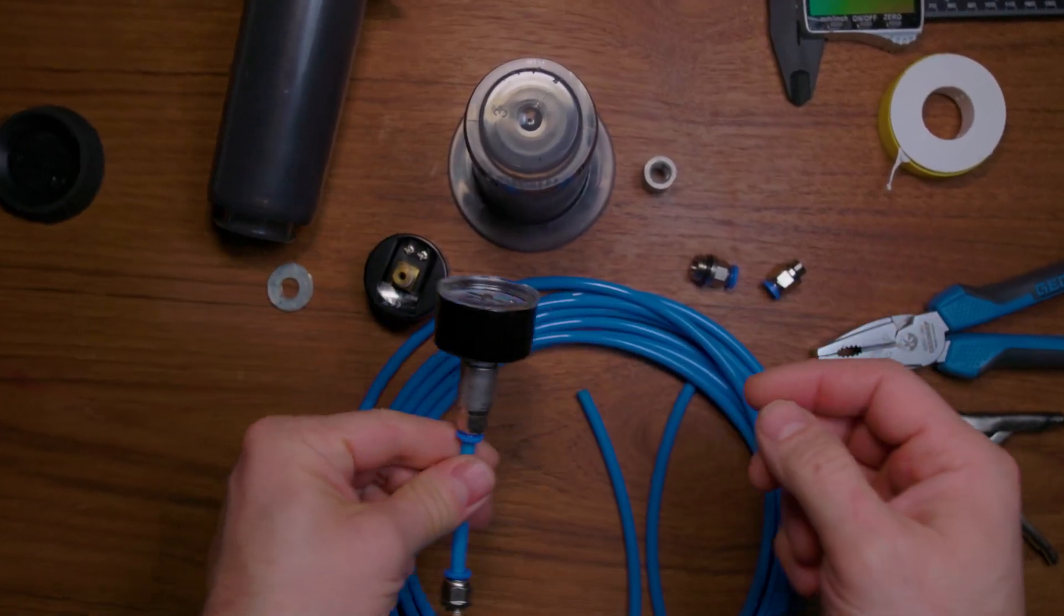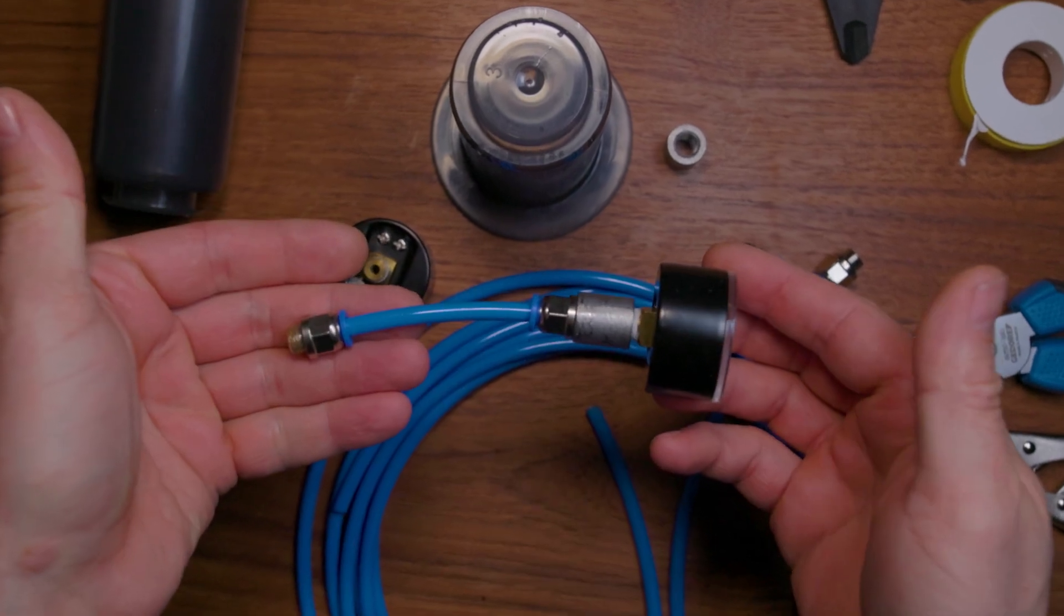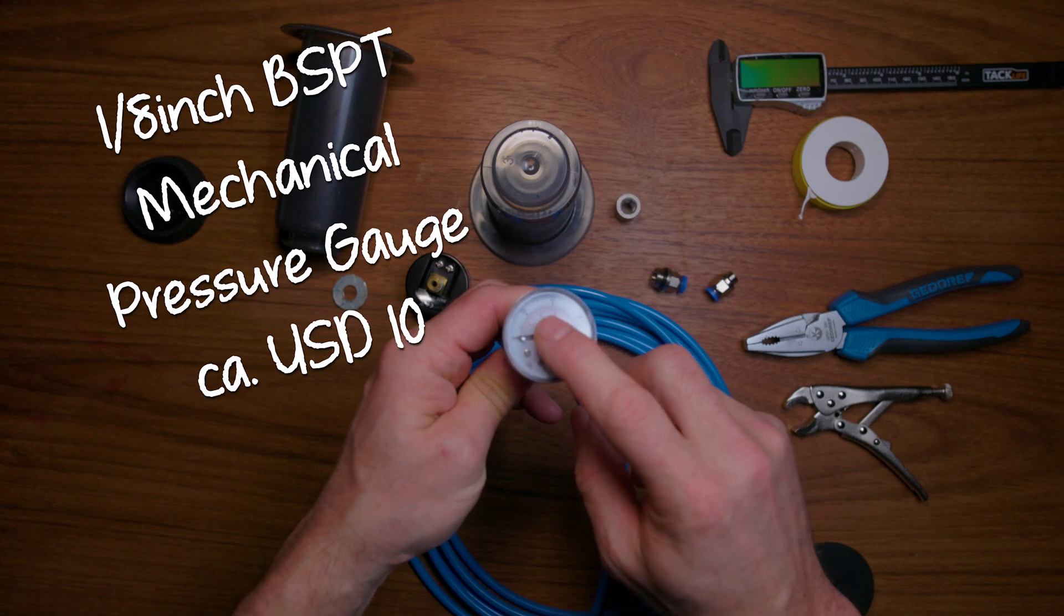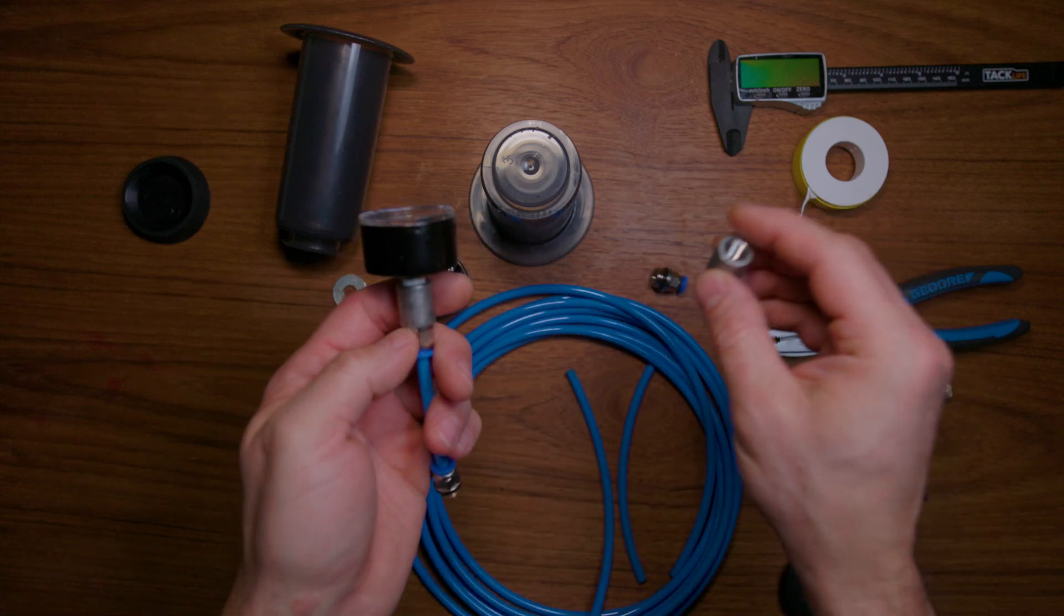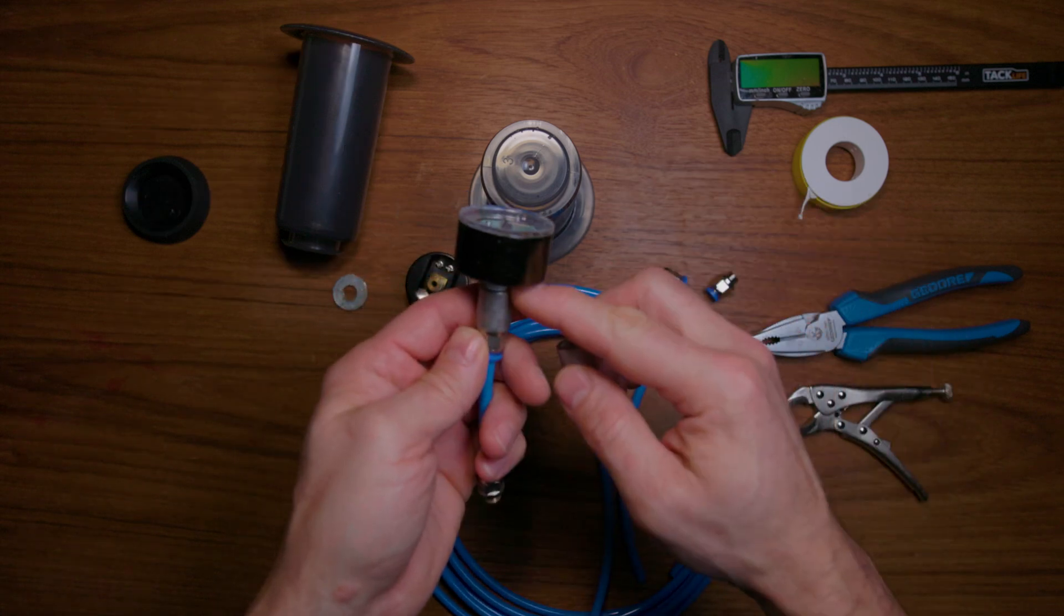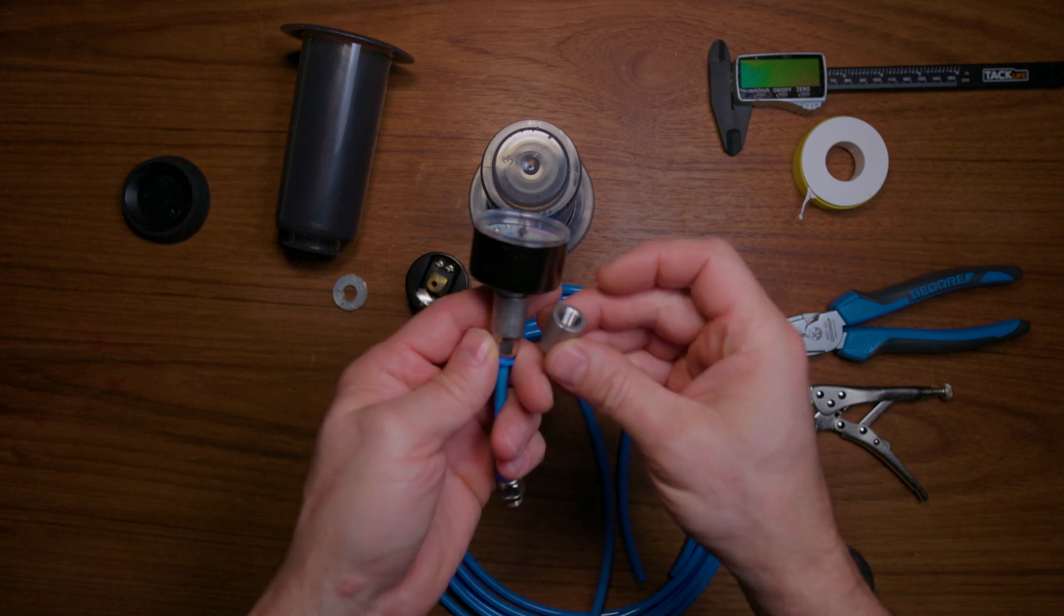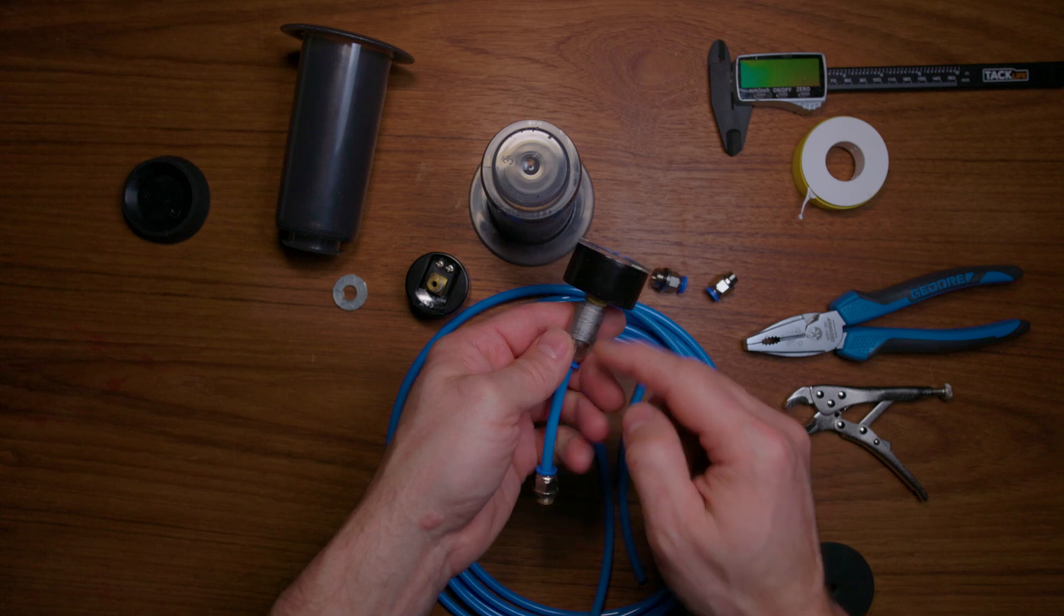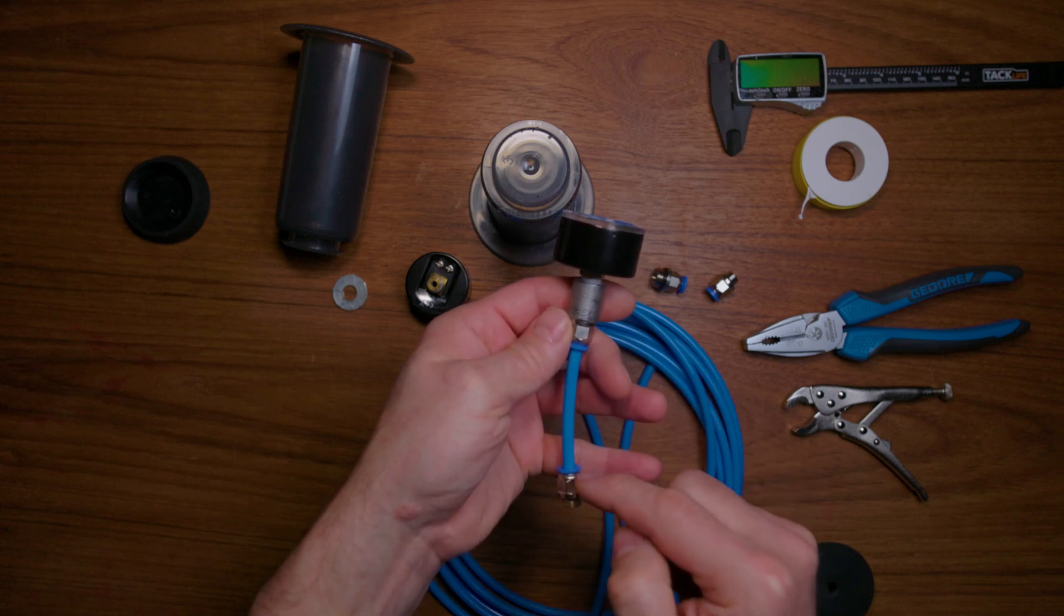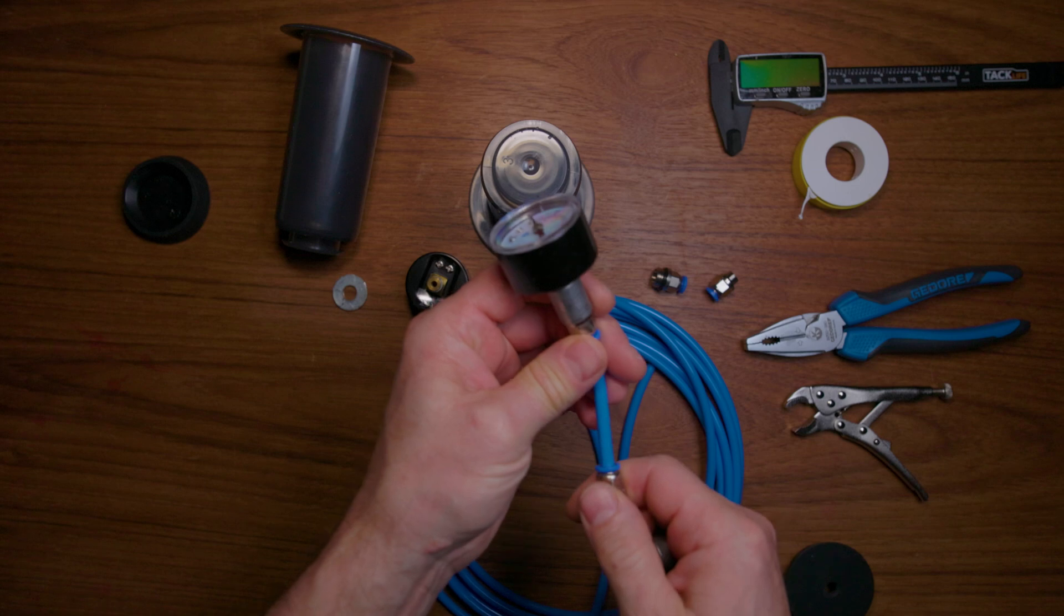So basically that is all that there is. It consists of the pressure gauge itself, a coupler. I'm using one-eighth of an inch threads but there's also one-fourth of an inch thread size for these manometers and also for these pneumatic connectors.